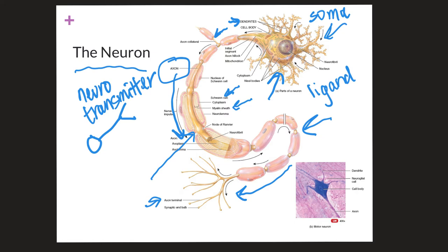One other thing to note is an area right below the cell body, before the true beginning of the axon and its myelin, called the axon hillock. The axon hillock also has a large concentration of voltage-gated channels, and we would say that the axon hillock is the start of action potential propagation.